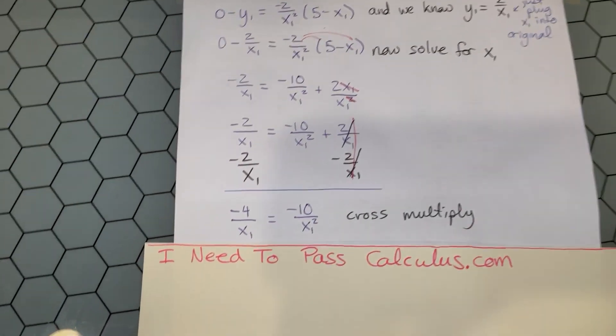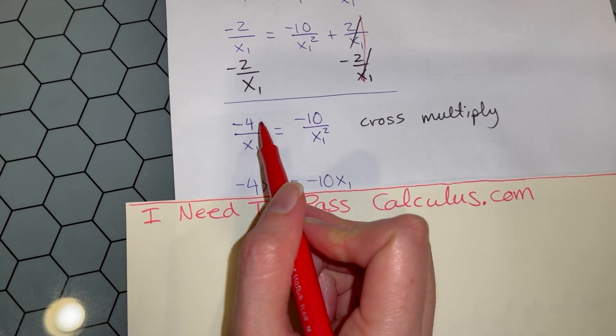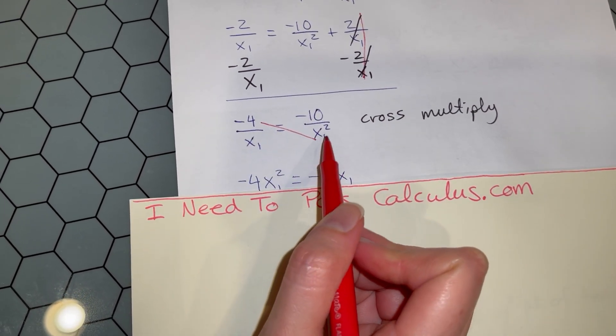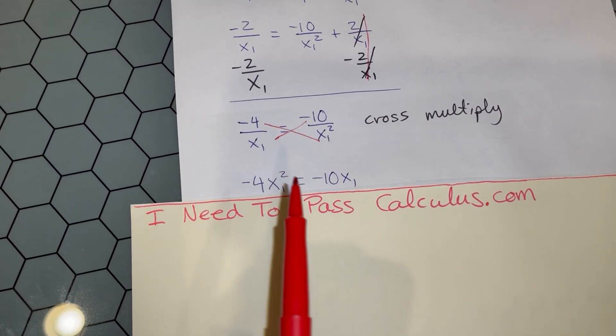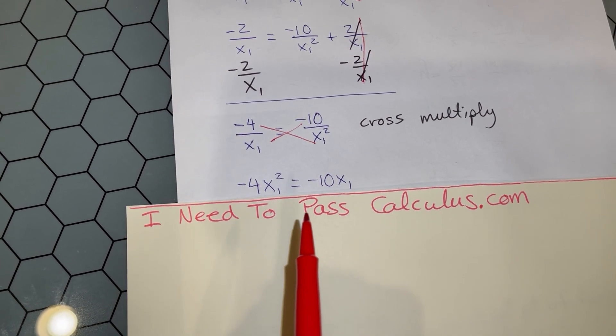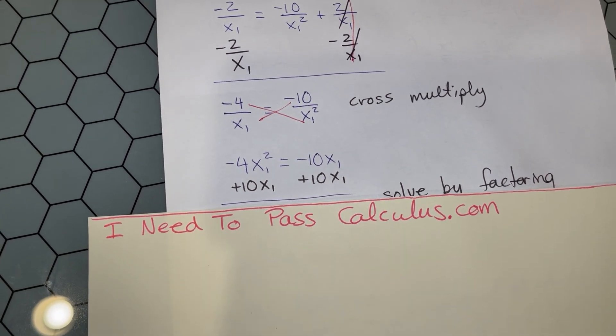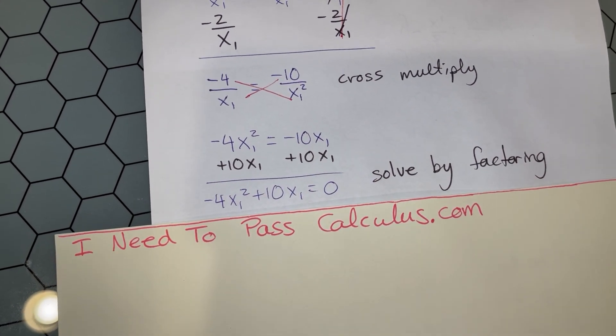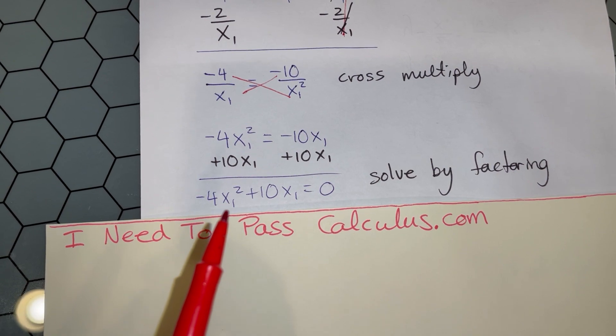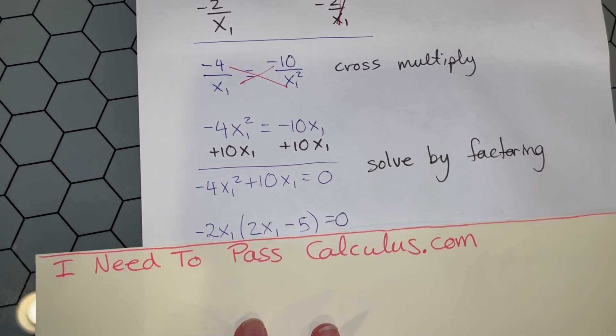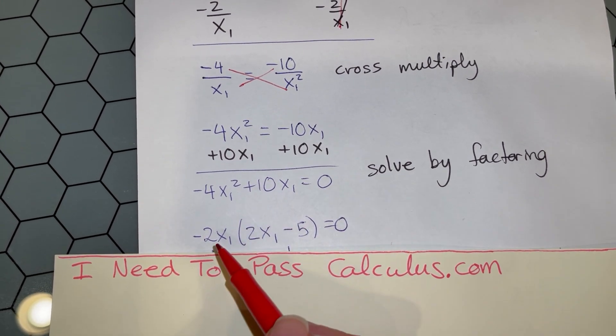We can cross multiply at this point, multiplying along the diagonal: -4x₁² = -10x₁. This looks like a quadratic equation, so let's move all terms to one side and solve by factoring. We have -4x₁² + 10x₁ = 0. There's a common factor we can pull out.